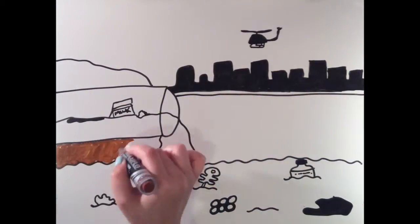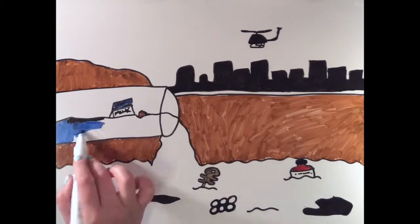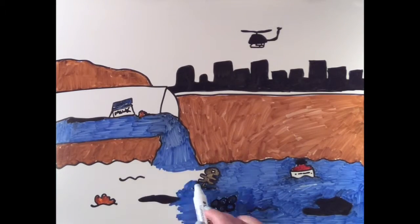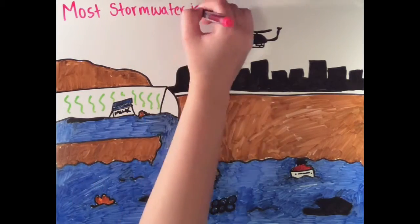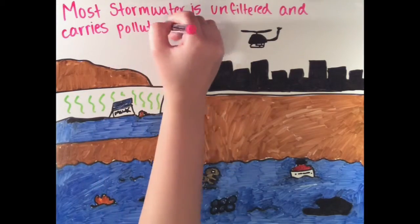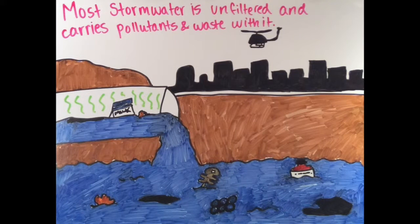Most stormwater runoff doesn't actually go through a filtering or cleaning process before it reaches larger water bodies, meaning that all the stuff the stormwater picked up along the way goes into the lakes, rivers, and seas with it. This can disrupt a lot of the ecology that already exists in them.